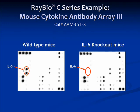Here we show a typical result using the mouse cytokine antibody array 3. Serum samples were taken from a wild-type mouse and an IL-6 knockout mouse. IL-6 was readily detectable in the wild-type sample, whereas no IL-6 was detected in the knockout. Interestingly, levels of other cytokines were also altered in the IL-6 knockout mouse.